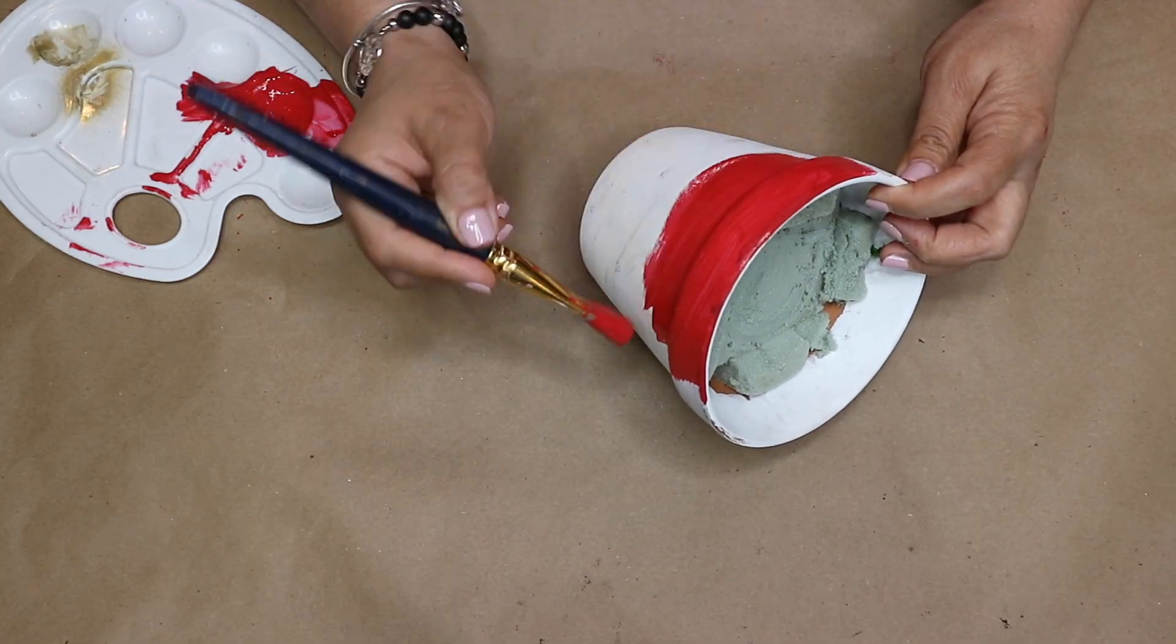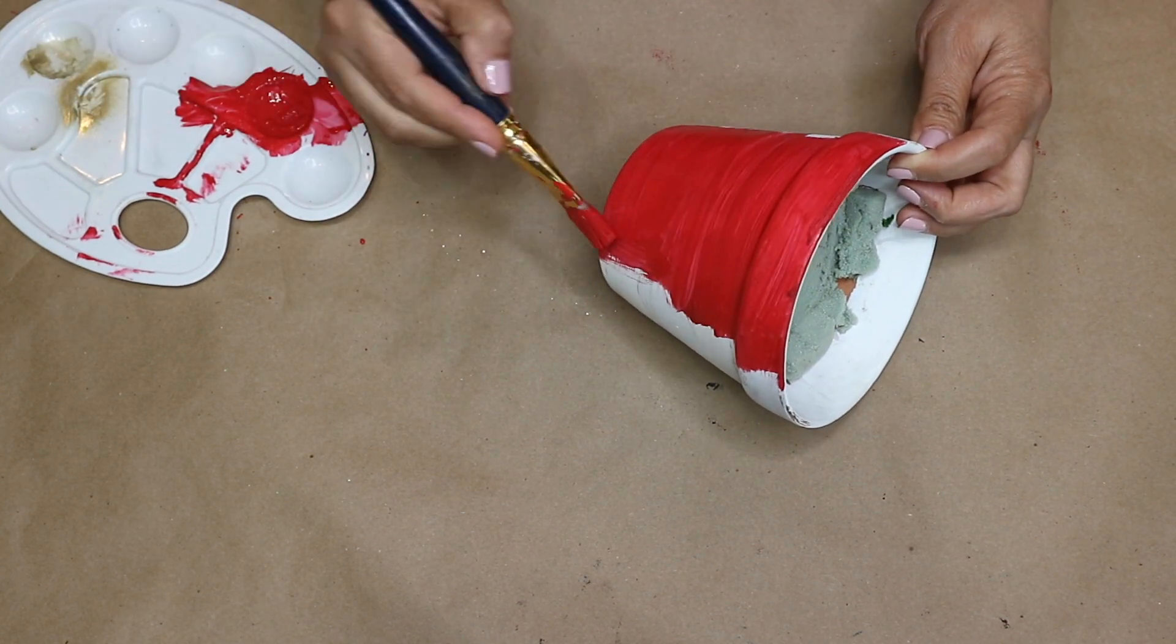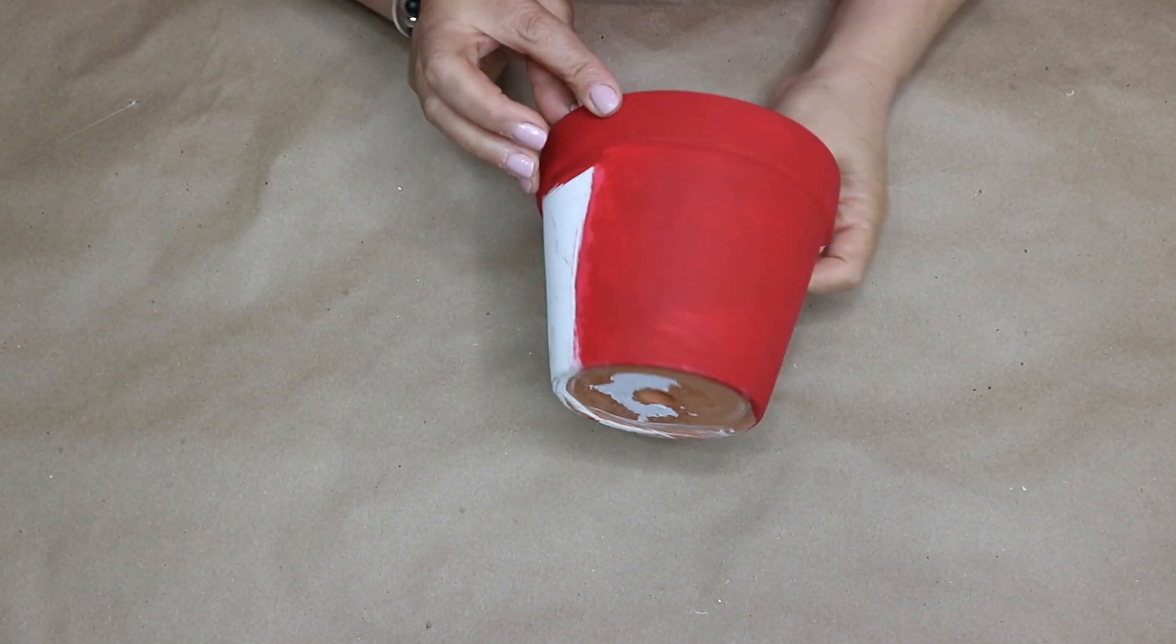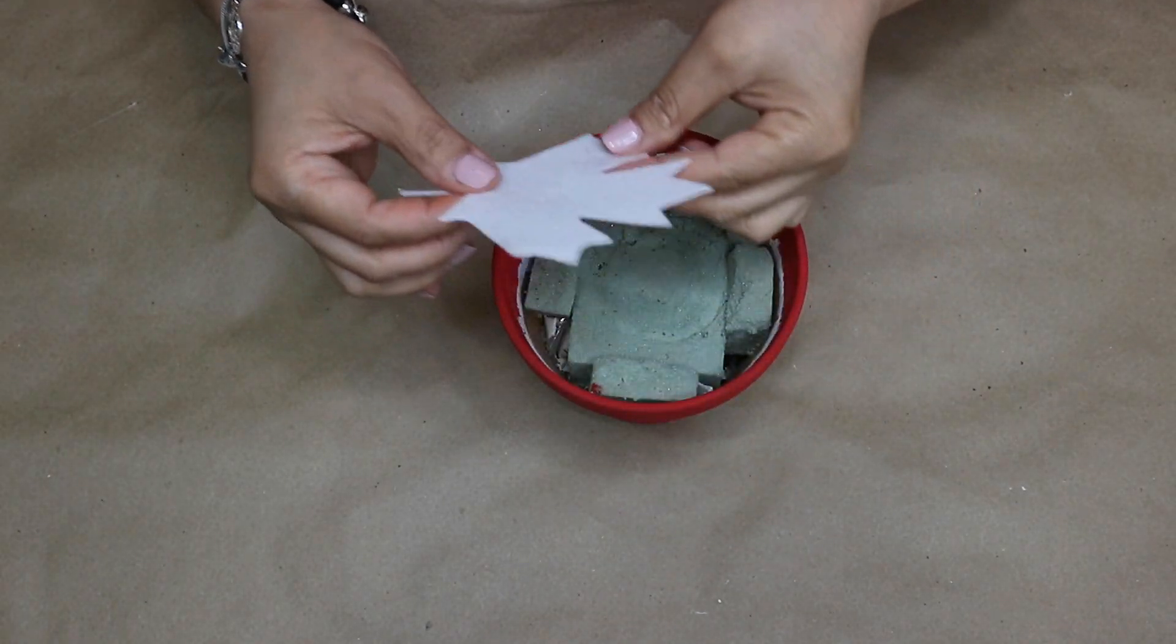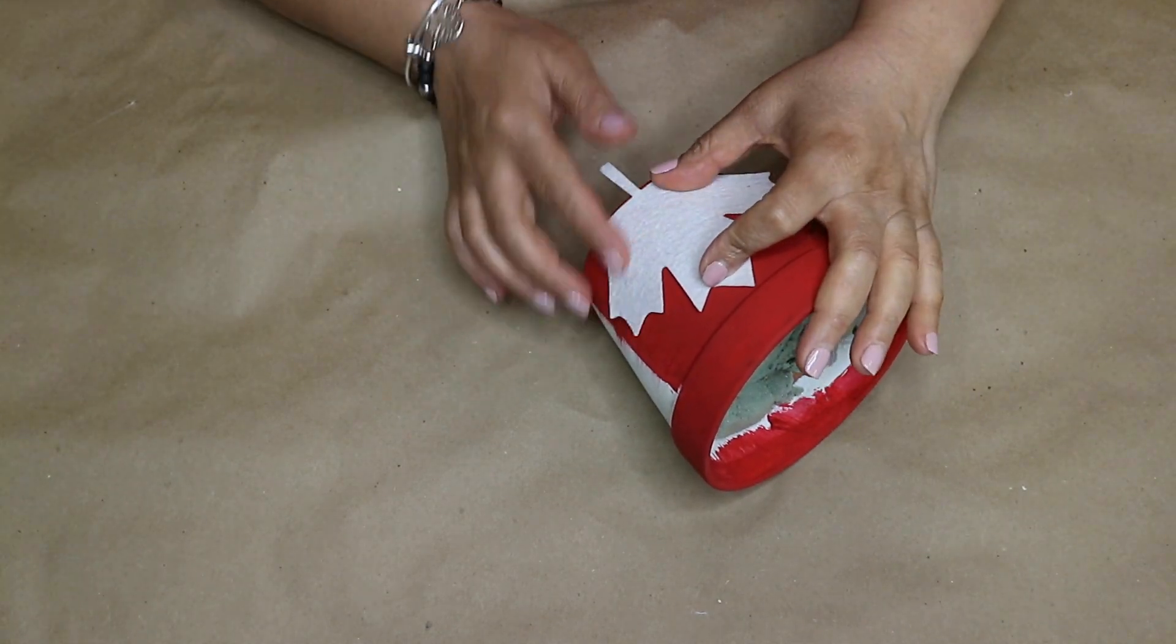Also I will paint this part of the pot in red. And once the red paint is dry I am gonna use this white maple that I already separated from the red one and then I adhere it on this red paint area.